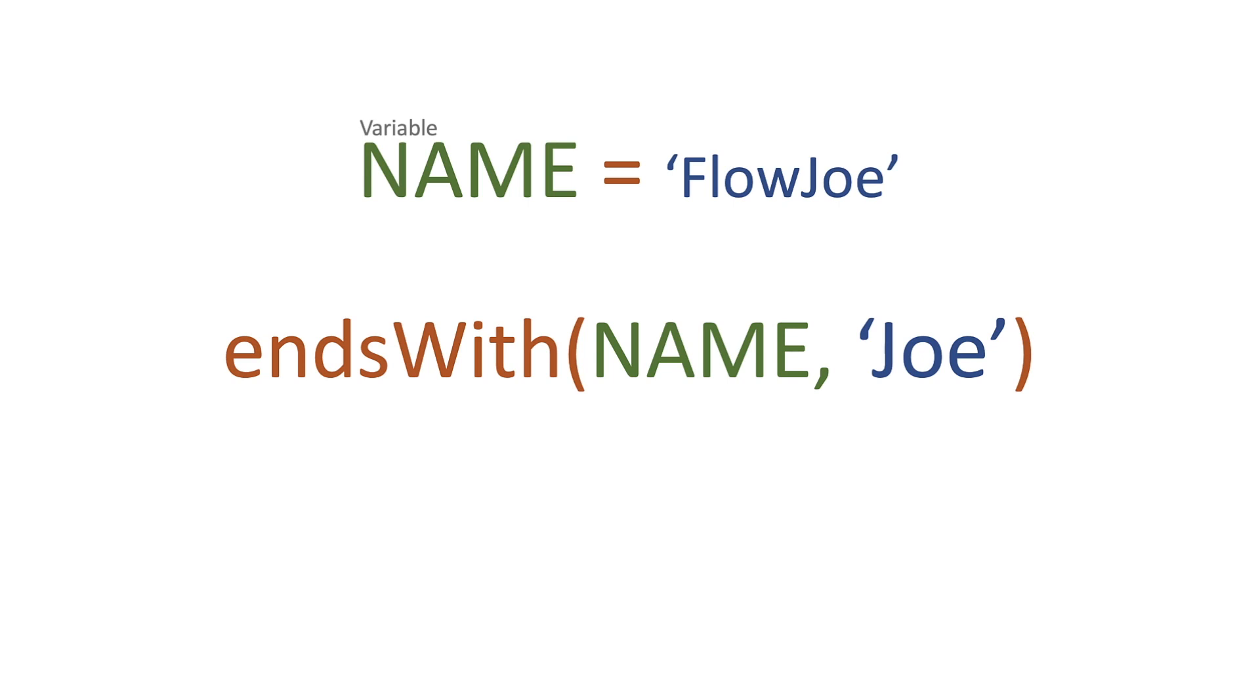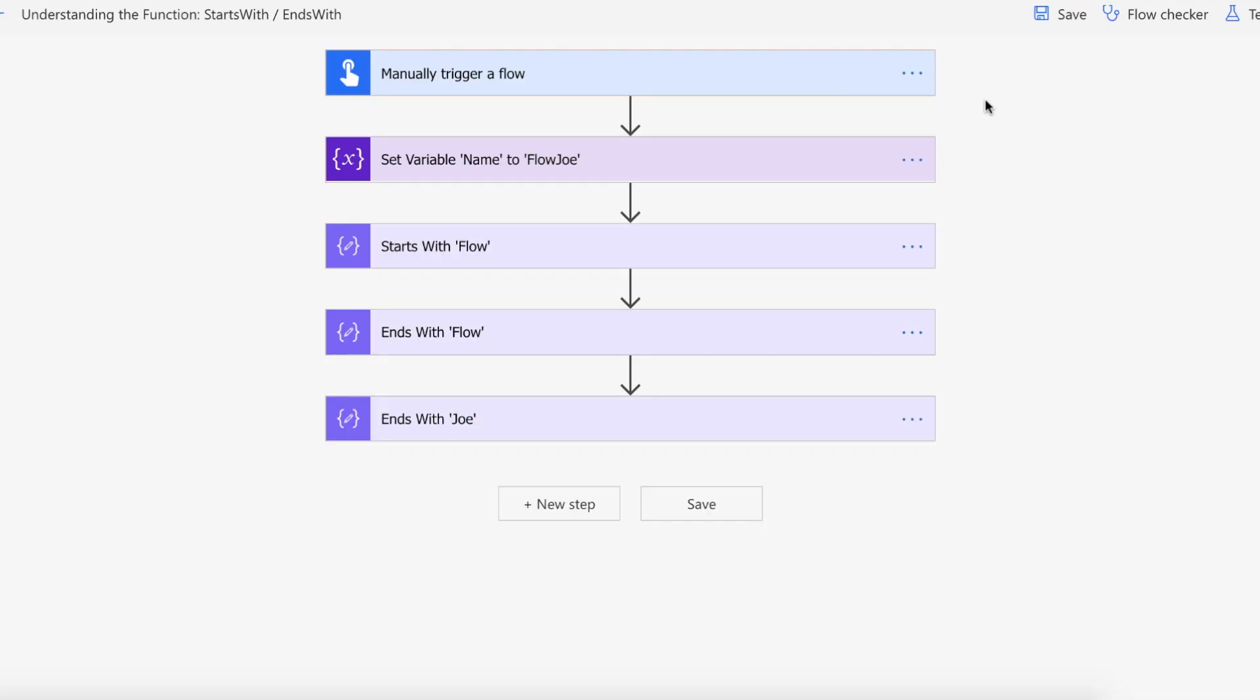Let's do it again, but actually pass in the NAME variable and then pass in 'Joe' as the endsWith. Obviously it comes back as true because Joe is actually at the end of FlowJoe. Let's see this in action on Power Automate.